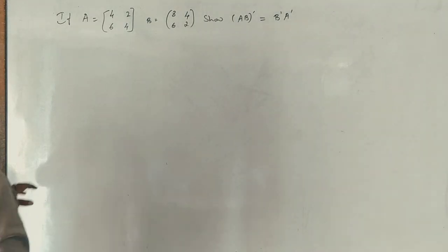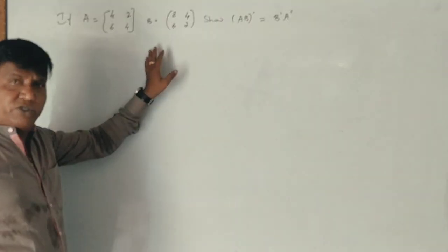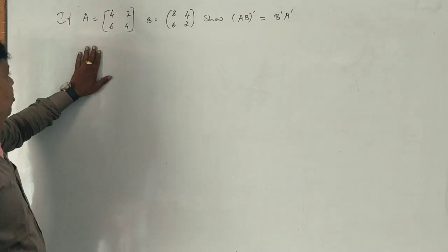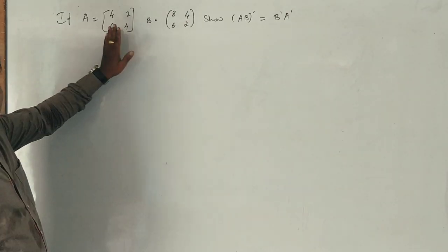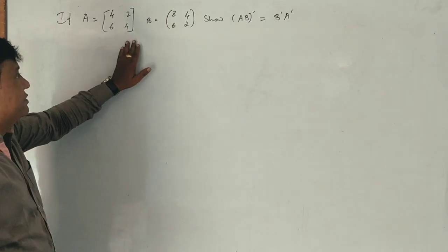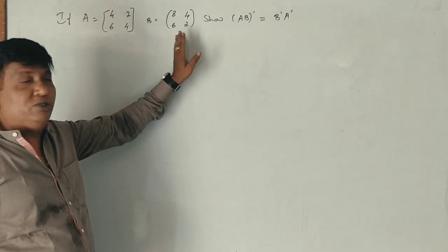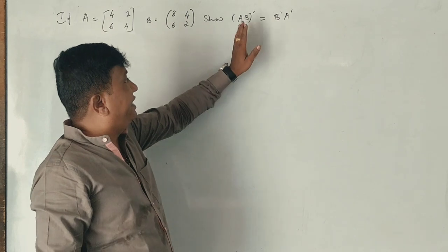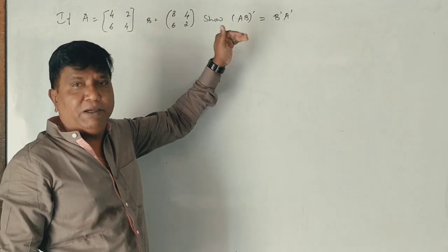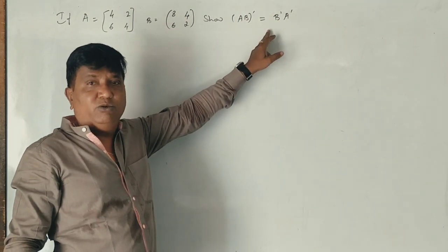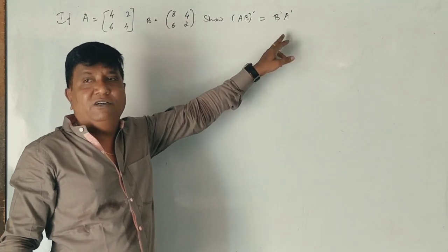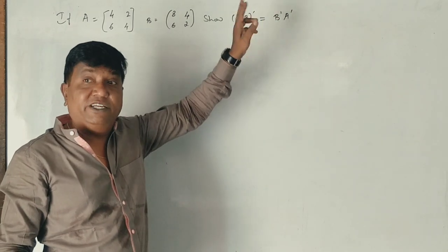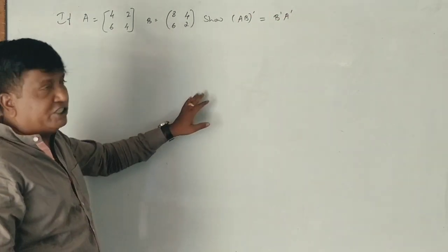Students, in 2017, the 16th month question was on matrix. This is a bit of the wrong path model. Matrix A is equal to [4,2,6,4], B is equal to [6,2]. The rule is: A B inverse is equal to B inverse into A inverse. This is the multiplication rule.